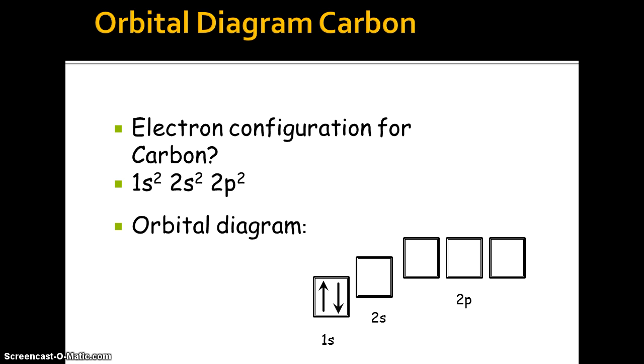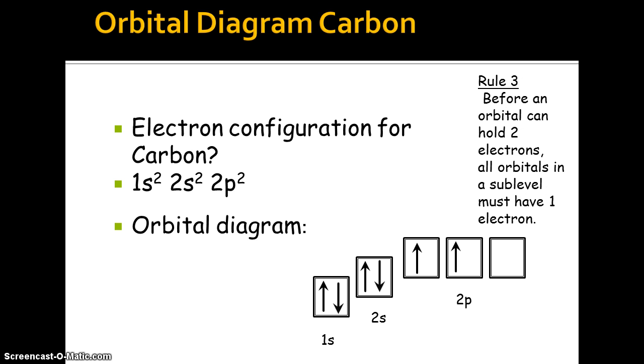So then I have to move on to the next sublevel. One, two. And then rule number three. Before an orbital can hold two electrons, all orbitals in a sublevel must have one electron. And so I'm going to space them out.